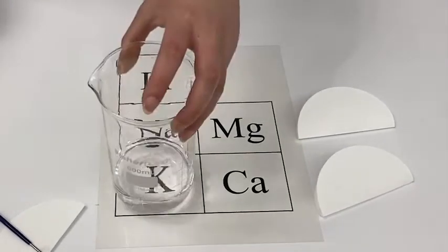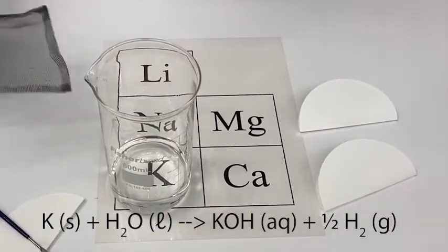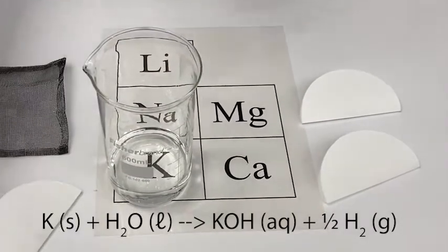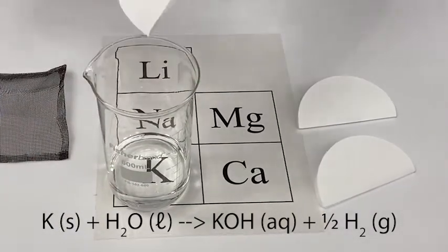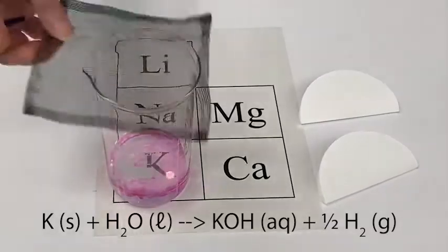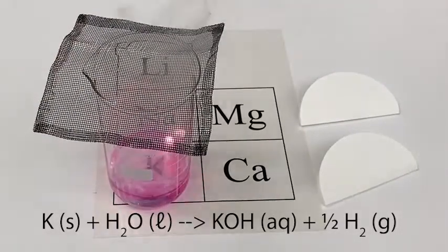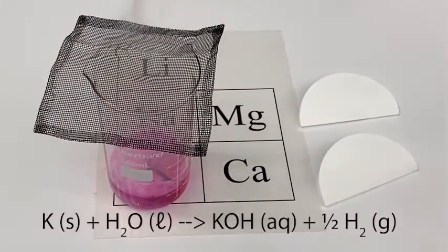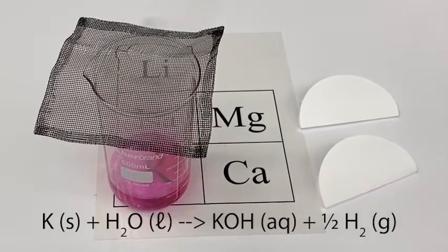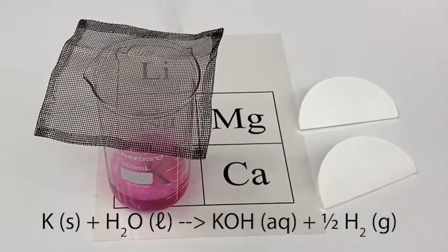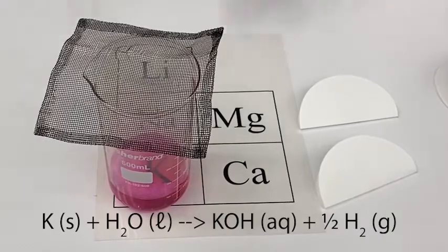Now let's take a look at potassium. Potassium is in a big beaker, and I have a screen for the top of it. Just like the other reactions, this one also produces hydrogen gas, but the reaction is so vigorous it lights the hydrogen gas on fire. The purple color you see is from the potassium ions.